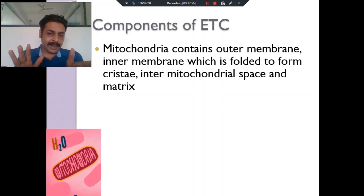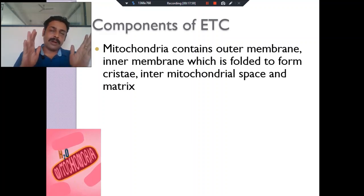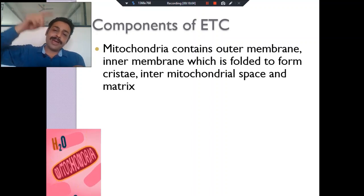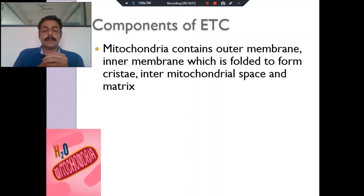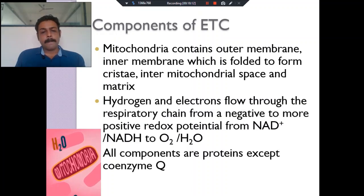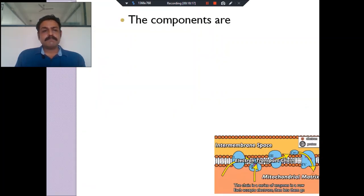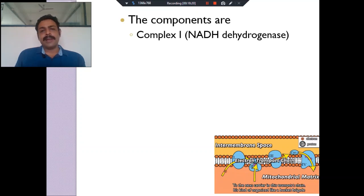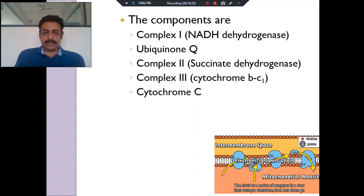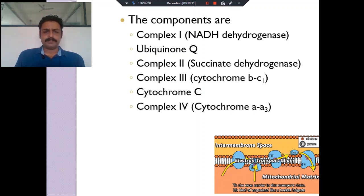Complex I, III, and IV function as proton pumps — they are not only enzymes but also transporters. Complex I is a hydrogen transporter. The complexes are: Complex I — NADH dehydrogenase; Complex II — succinate dehydrogenase; Complex III — cytochrome bc₁ complex, which also contains cytochrome c in between; Complex IV — cytochrome a/a₃, also called cytochrome oxidase. Except coenzyme Q, all are proteins.